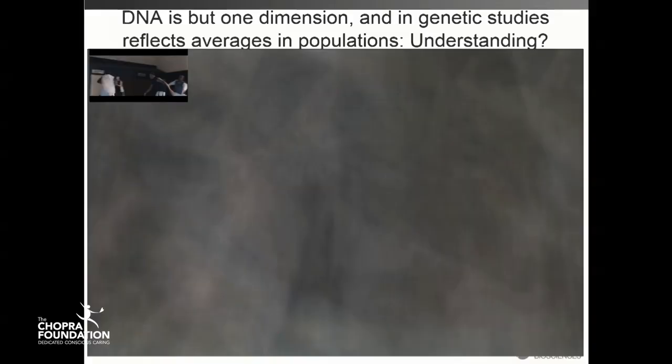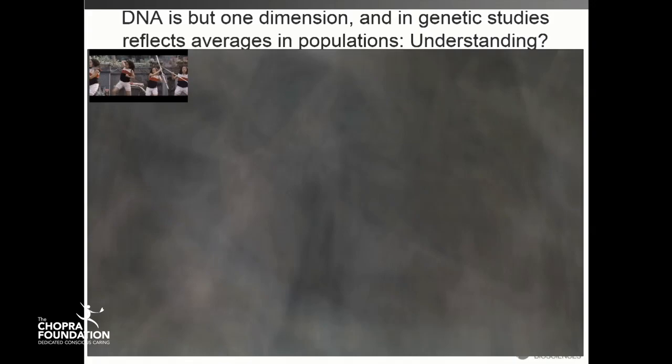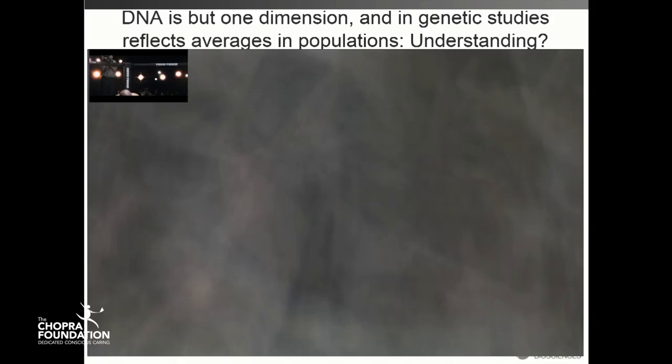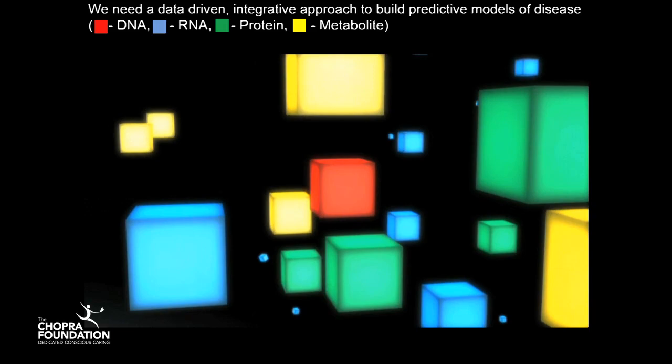Now I'll take you back to the movie analogy. We're looking at the DNA in a very one-dimensional way. What I did is I took each frame of that movie, aligned all the pixels over all the frames, and then took the average of each of those pixels across the frames — and that's what you're looking at. That's what we're doing in genetics. By looking at one dimension at a time, we're trying to understand the movie of life by looking at the averages. You can't look at that average and understand anything about the video clip. We're not going to understand human diseases by looking at a single dimension at a time.